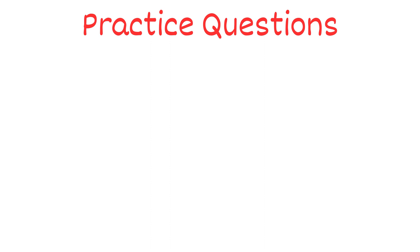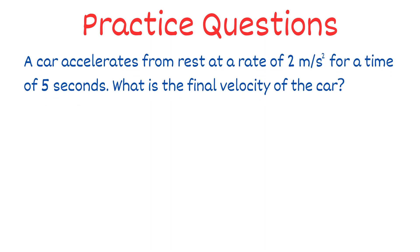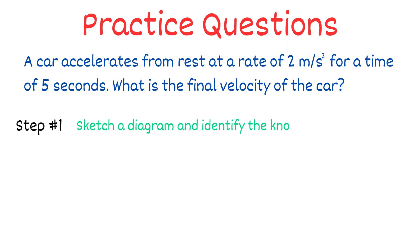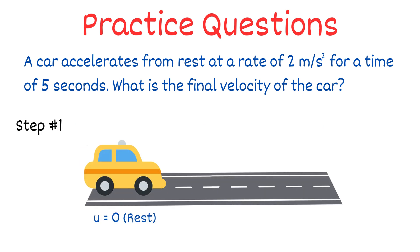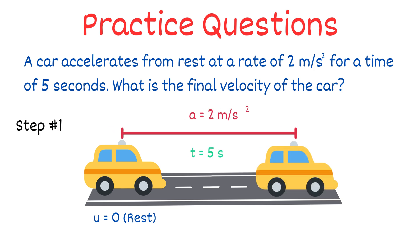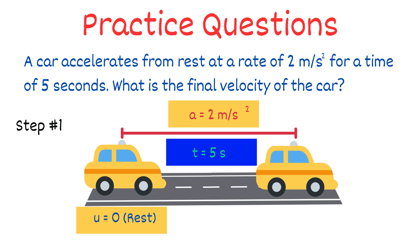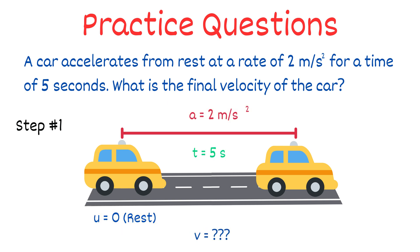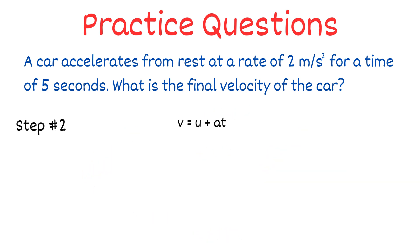Now let's solve a few questions. A car accelerates from rest at a rate of 2 meters per second squared — we are asked to find the final velocity after 5 seconds. The car starts from rest, so U equals 0. Acceleration A equals 2 m/s², and T equals 5 seconds. Using V equals U plus AT, we get V equals 0 plus 2 times 5, so V equals 10 meters per second.